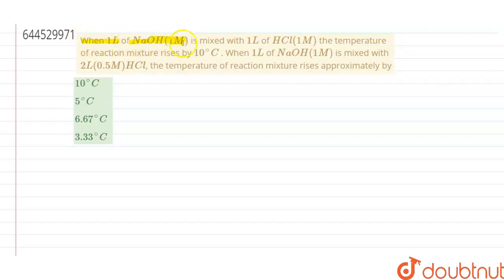The question given here is: when one liter of NaOH (1 molar) is mixed with one liter of HCl (1 molar), the temperature of the reaction mixture rises by 10 degrees Celsius. When one liter of NaOH (1 molar) is mixed with two liters of 0.4 molar HCl, the temperature of the reaction mixture rises approximately by what?